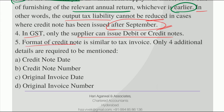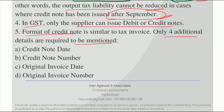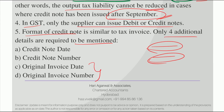The format of the credit note is similar to the tax invoice format. Only four additional details are required to be mentioned. In the tax invoice format, we mention the invoice number and invoice date. So in the credit note, we have to mention the credit note number and the credit note date. Along with this, we have to mention the original invoice date and original invoice number as well. The details of the original invoice against which you are issuing this credit note must also be mentioned — that is, the original invoice date and original invoice number.